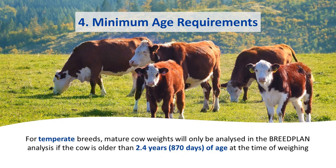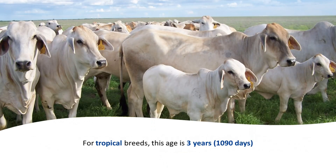For temperate breeds, mature cow weights will only be analysed in the breed plan analysis if the cow is older than 2.4 years or 870 days of age at the time of weighing. For tropical breeds, this age is 3 years or 1,090 days.